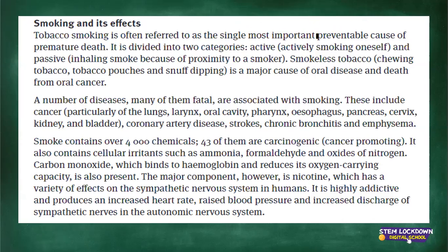It is the most important preventable cause of premature death — it is preventable. If you could just stop smoking, we could prevent a lot of deaths due to respiratory diseases. Smoking is divided into two categories: active smoking, where someone is actively smoking themselves, and passive smoking, where you inhale smoke because of proximity to a smoker — for example, sitting in a taxi or room where someone is smoking.